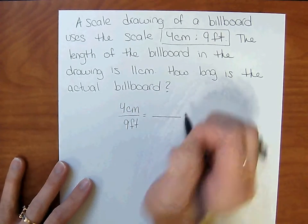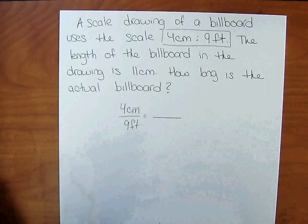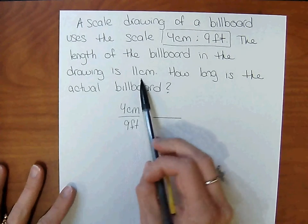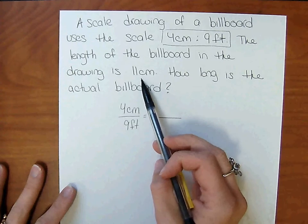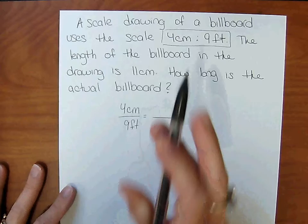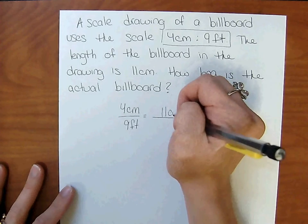Equals? Well, we were given that the length of the billboard in the drawing is 11 centimeters. So we're going to line up our units. Centimeters are going to line up with centimeters. So we have them in the numerator. So we're going to put 11 centimeters in the numerator.